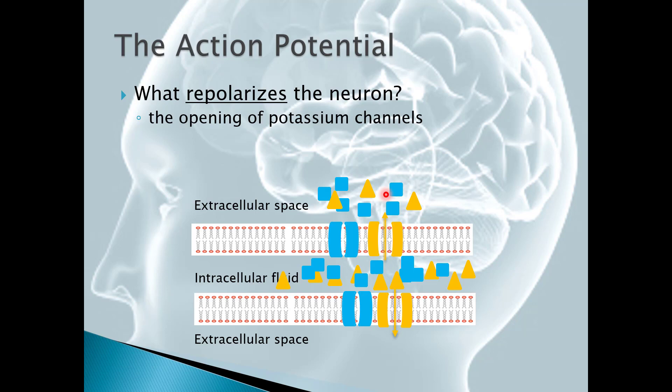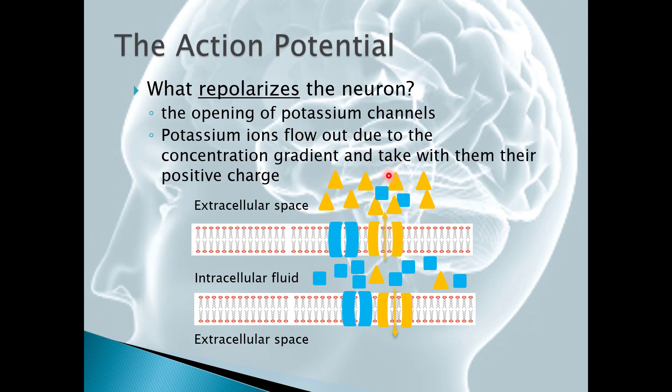So just as we had this rapid diffusion of sodium into the cell with the depolarization, we're going to have a rapid diffusion of potassium out of the cell. So potassium ions float out due to the concentration gradient and the electrical gradient and take with them their positive charge.